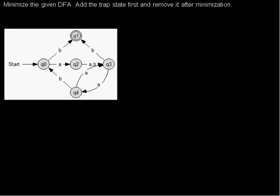I'd like to show you how to minimize a deterministic finite state automaton. Minimizing means if we have several states that have the same function — if we are in those states, we can read the same set of words so that they will be accepted. If those states have the same function, we don't need both, so we can merge them into one. I'll show you how that works.